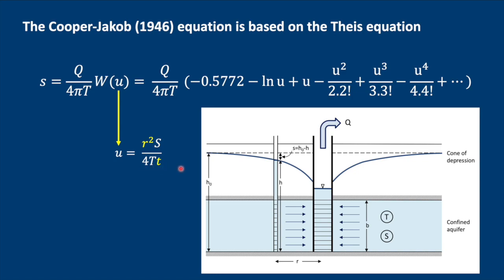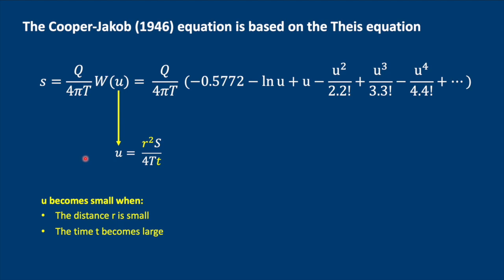Now what Cooper-Jacob said was that if the distance R from our pumping well is very small, then U will become small. And the same is true for T. When T becomes very large, we're dividing by a large number here, then U will also become very small. If U is sufficiently small, then we can simplify the Theis equation.